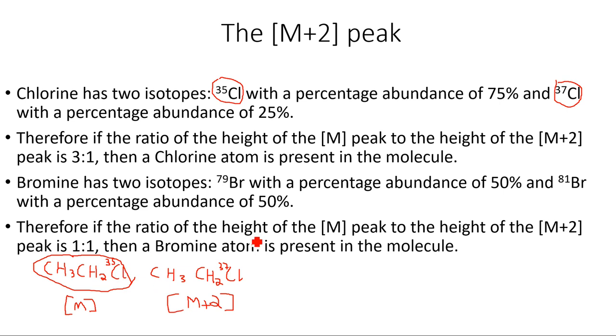Keep in mind what I've written over here, the percentage abundance. I know that the percentage abundance of the Cl-35 isotope is 75 percent, you have to learn this value, and the percentage abundance of the Cl-37 isotope is 25 percent. This means that the Cl-35 isotope is more abundant than the Cl-37 isotope, and we will look at this in our mass spectrum.